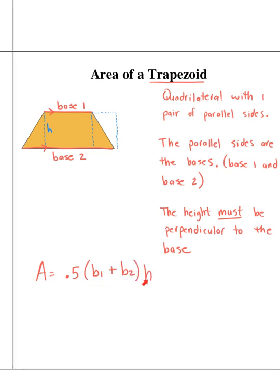This is the easiest way to do it. Use 0.5 instead of one half. Use parentheses, base 1 plus base 2 times the height.